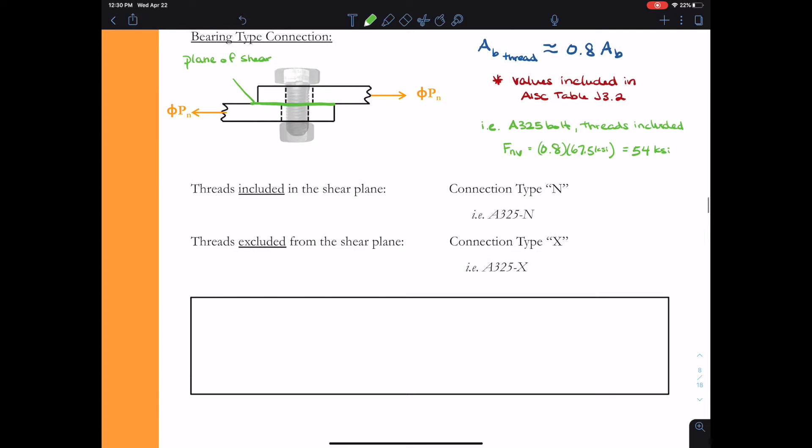How do we remember the different types of connections? I like to bring out my Texas accent—I don't really have one yet. But I like to say if threads are included in the shear plane, then you have a connection type N. If they're excluded from the shear plane, you have connection type X. So if you have the threads in the shear plane, you have a connection type N. If you have them excluded, it's connection type X. Now it's very, very important that if you don't know for sure whether or not your threads will be in the plane of shear or excluded from the plane of shear, then you must conservatively assume that the threads are included.